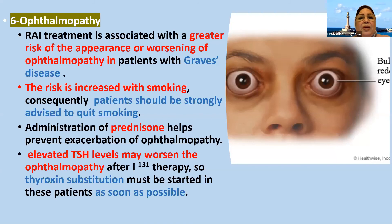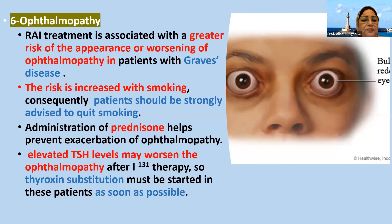Ophthalmopathy is associated with radioactive iodine treatment, with a greater risk of appearance or worsening of ophthalmopathy in patients with Graves' disease. The risk is increased with smoking; consequently, patients should be strongly advised to quit smoking. Administration of prednisone helps to prevent exacerbation of ophthalmopathy. Elevated TSH levels may worsen the ophthalmopathy after radioactive iodine, so thyroxine substitution may be started in these patients.